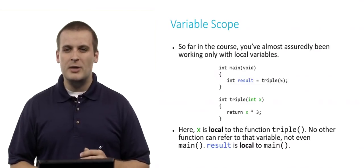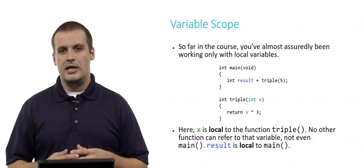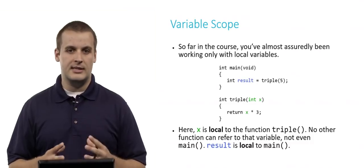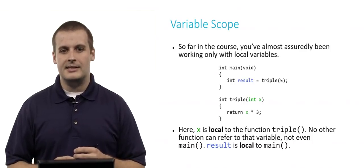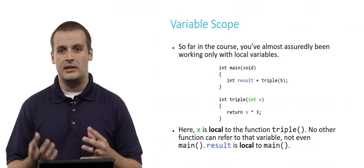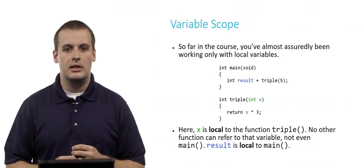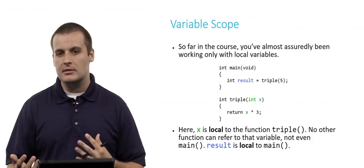So far in the course, you've pretty much been working exclusively with local variables. Here's an example of a very simple main function and a very simple additional function that we've written. In this case, x, which I've colored green just to highlight the locality or the scope of that variable, is local to the function triple.